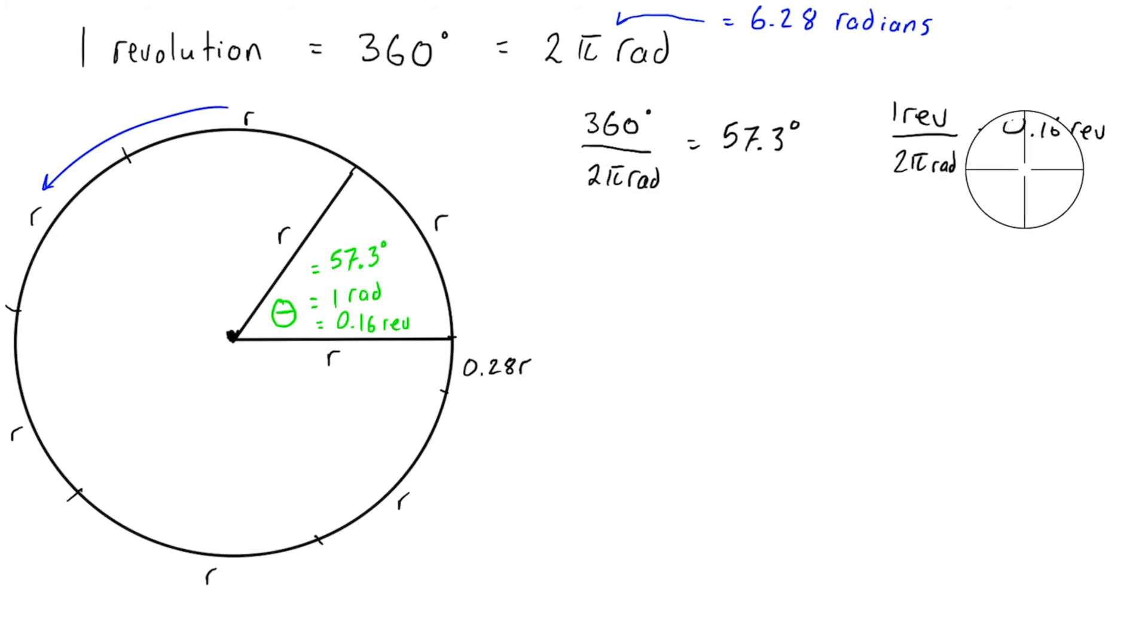You can work these all backwards, like 0.16 times 2π will give you one revolution. So vice versa, you can go between degrees, radians, and revolutions pretty easily just multiplying by unity fractions using these three values. Let's actually do some more conversions along those lines.